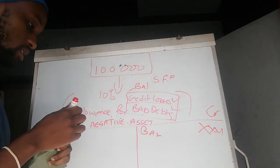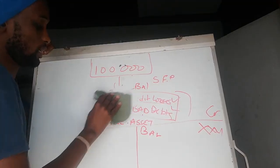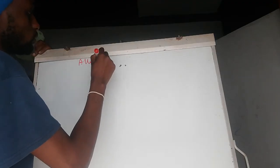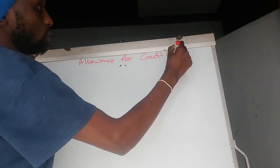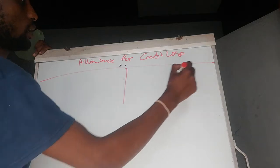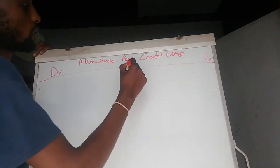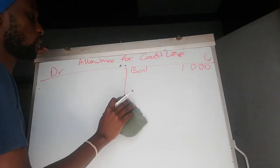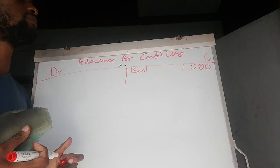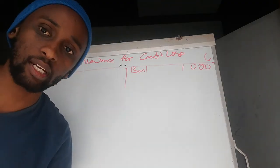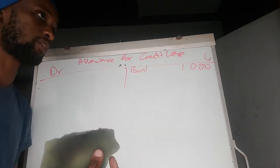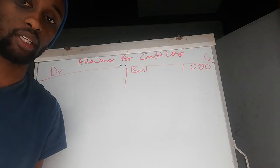Now there's something that they love doing in questions that confuses a lot of people. Let's look at the allowance for credit losses T-account. The opening balance, for instance in my example, is 1,000. Then they say in a question it was agreed that the allowance for credit losses has to be increased to 1,500.